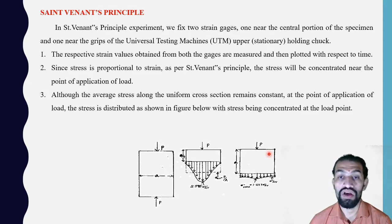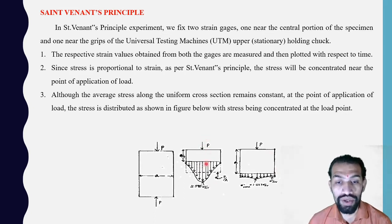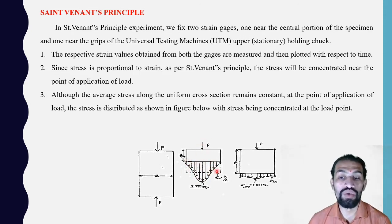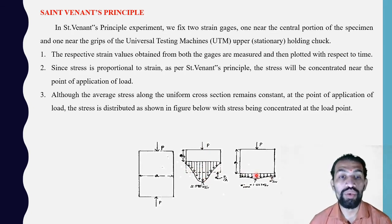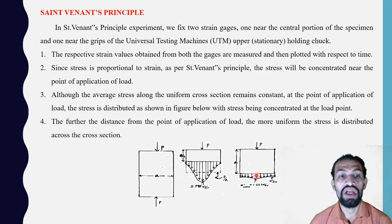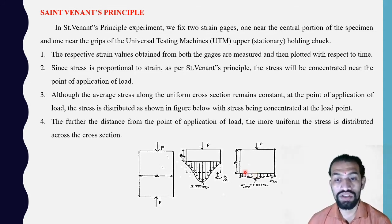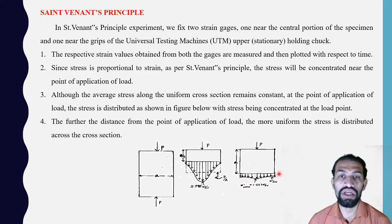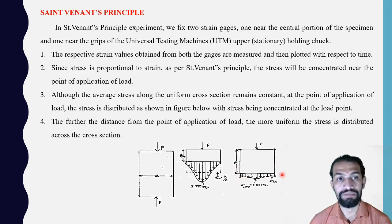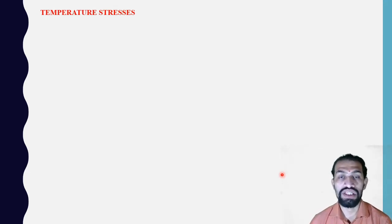Although the average stress along the uniform cross section remains constant, at the point of application of load the stress is concentrated as shown in the figure. The further the distance from the point of load application, the more uniformly the stress is distributed across the cross section. When the cross-section length increases, the stress concentration becomes more uniform — distributed throughout the whole cross section — and it becomes equivalent to the average stress acting.